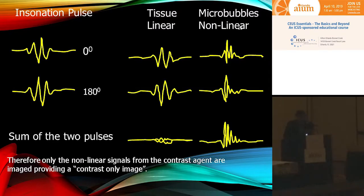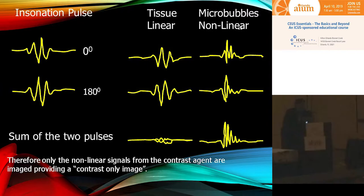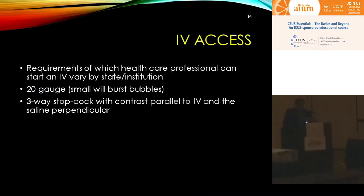With pulse inversion — the simplest technique — we send in two pulses out of phase from each other. The linear signals subtract and have no signal, but the non-linear response gives us signal. If we subtract the out-of-phase images instead of adding them, we get a B-mode image, which some vendors use as their real-time B-mode. That B-mode image may not be as beautiful as non-contrast B-mode because SonoCT, harmonics, and other features are shut off, but it is truly a real-time image from the same information used for the contrast image, so you can be confident you're looking at the same location.